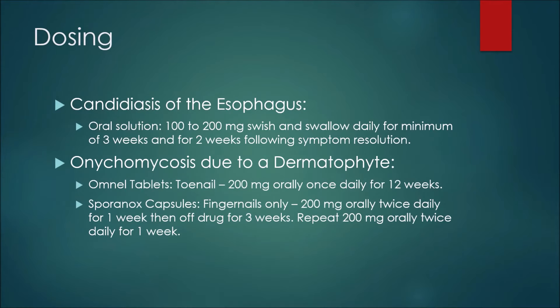For some examples of dosing with itraconazole: in the treatment of candidiasis of the esophagus using the oral solution, we may see 100 to 200 milligrams swish and swallowed daily for a minimum of three weeks, and then for two weeks following symptom resolution. For onychomycosis due to a dermatophyte, the Omnel tablets used for a toenail would be given at 200 milligrams orally once daily for 12 weeks.